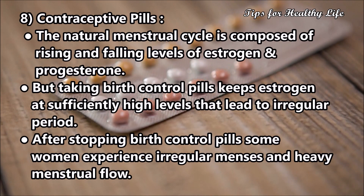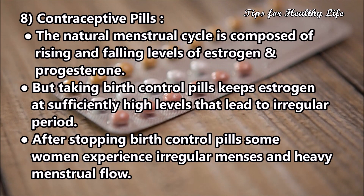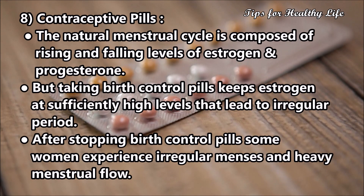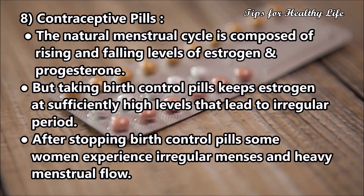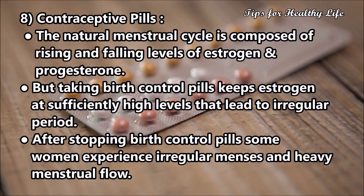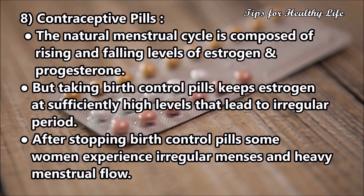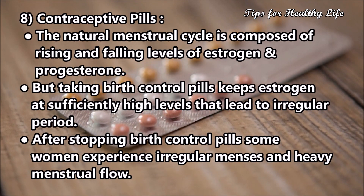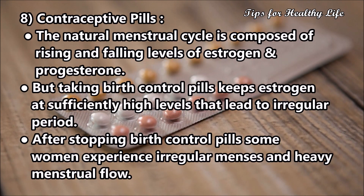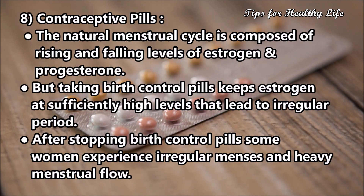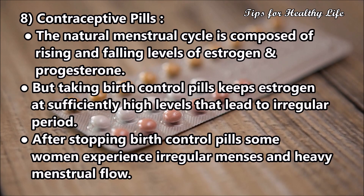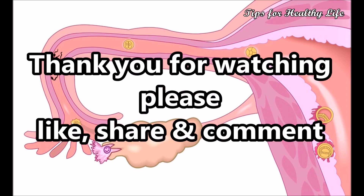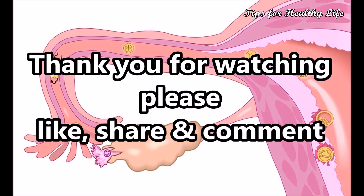Cause 8: Contraceptive pills. The natural menstrual cycle is composed of rising and falling levels of estrogen and progesterone. Taking birth control pills keeps estrogen at sufficiently high levels, leading to irregular periods. After stopping birth control pills, some women experience irregular menses and heavy menstrual flow.